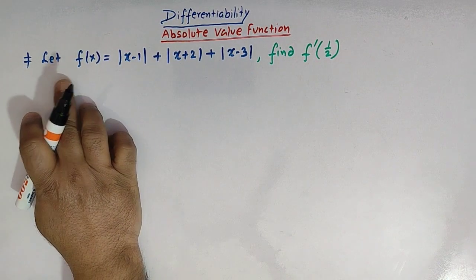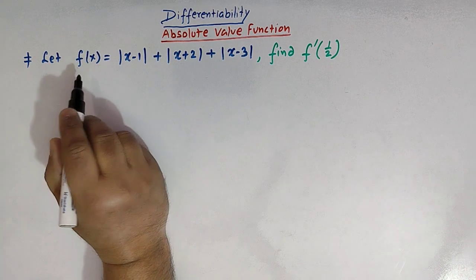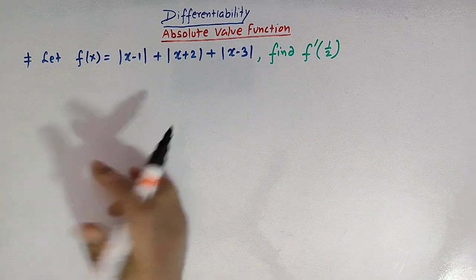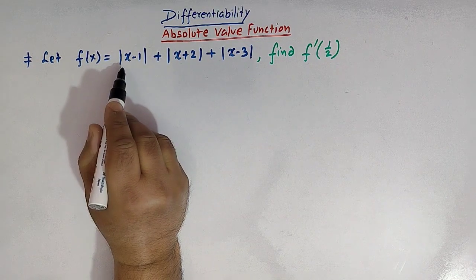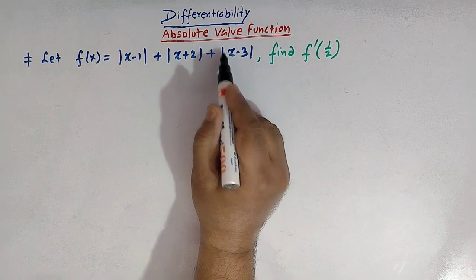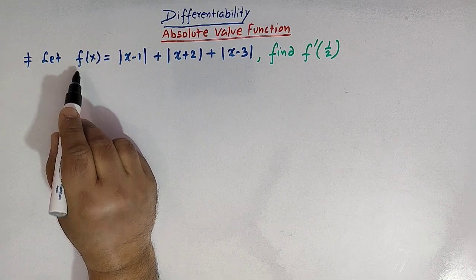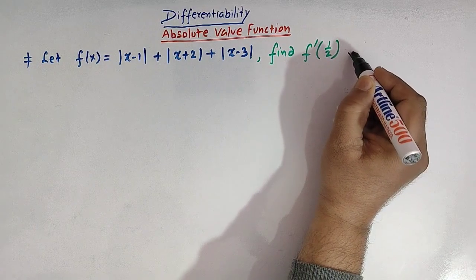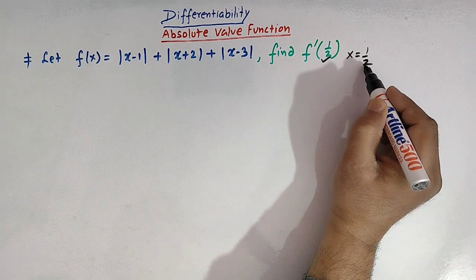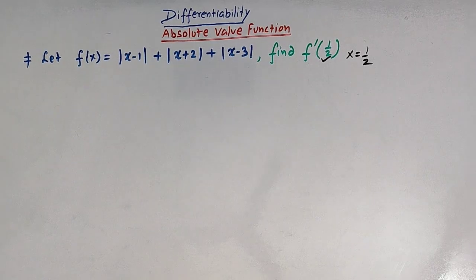We have a problem where we are given a function f of x, and this function is a sum of three absolute value functions. So f of x is equal to mod of x minus one, plus mod of x plus two, plus mod of x minus three, and we have to find the derivative of this function f of x at x is equal to half.